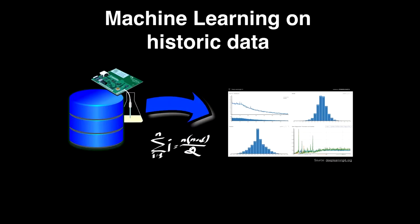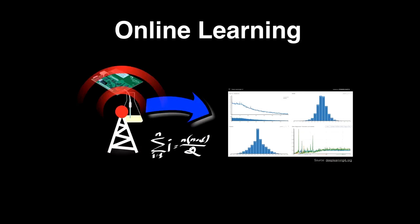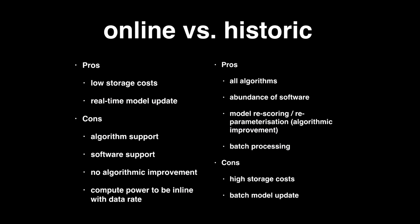There are two flavors of machine learning: on historic data and on real-time data. The pros of online learning are low storage cost and the ability to update your model in real time. However, not all algorithms support incremental data processing, many software packages lack that support, and you cannot improve your algorithm later because you've lost all your data.